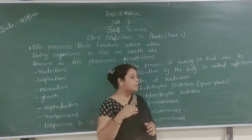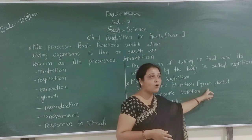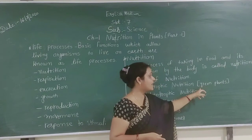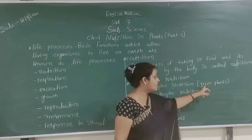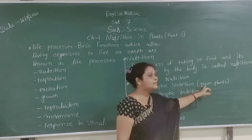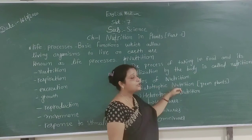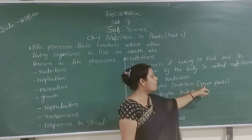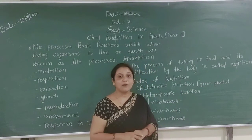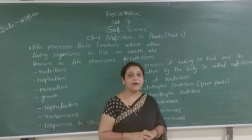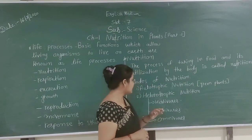Green plants are the example of autotrophic nutrition because they always make their food by their own self, using the photosynthesis process.